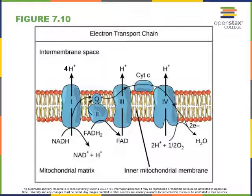Complex 2 of the electron transport chain is also known as succinate dehydrogenase complex, which performs one of the reactions of the citric acid cycle where succinate is oxidized to form fumarate, at the same time as FAD is reduced forming FADH2. In the following step, FADH2 becomes oxidized to form FAD, and a molecule of ubiquinone becomes reduced to ubiquinol.